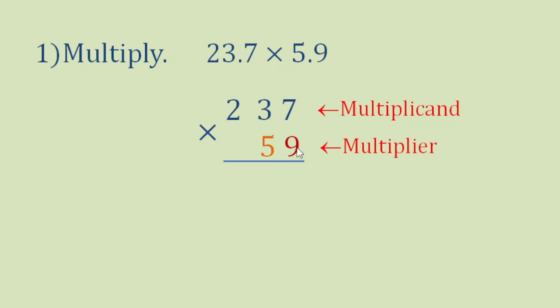Let's start multiplying now. 9 times 7 is 63. Bring down 3, carry 6. 9 times 3 is 27, plus 6 is 33. Bring down 3, carry 3. Then 9 times 2 is 18, plus 3 is 21. We already finished multiplying 9 to all the digits in our multiplicand.